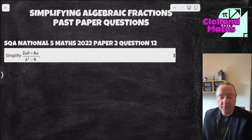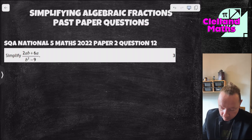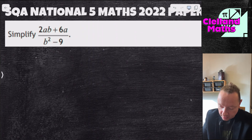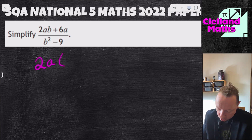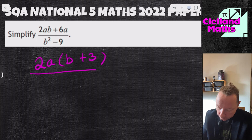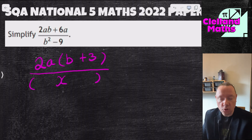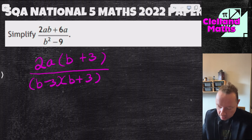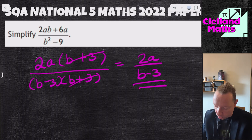National 5 Maths 2022 paper 2 question 12: simplify 2ab plus 6a over b² minus 9. The top has common factor 2a, giving 2a(b+3). The bottom, b² minus 9, is a difference of two squares: (b+3)(b-3). The (b+3)s cancel, leaving 2a over b minus 3.